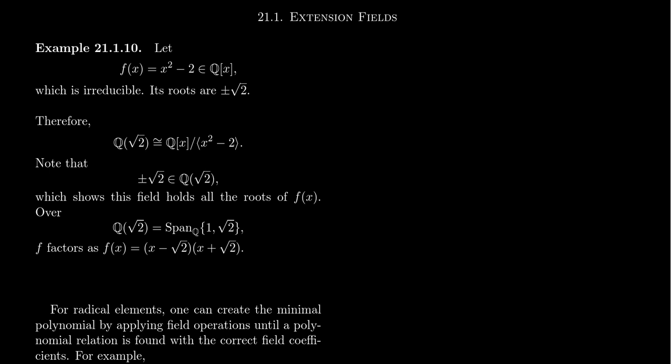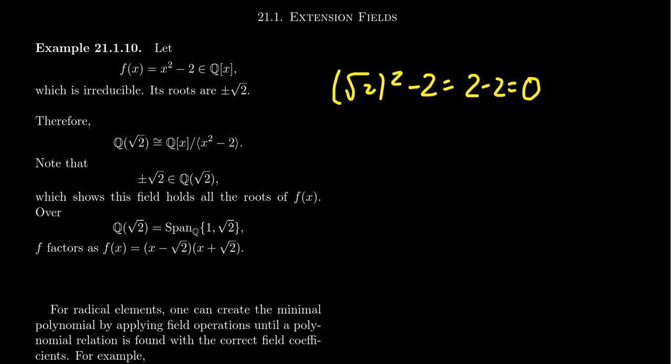We have this irreducible polynomial, and we know from past work that the polynomial x² - 2 has roots ±√2. If we substitute √2, we get (√2)² - 2 = 2 - 2 = 0, and the negative square root works similarly. So we have two roots which are not rational numbers — the square root of 2 is irrational, going back to the days of Euclid who proved it.